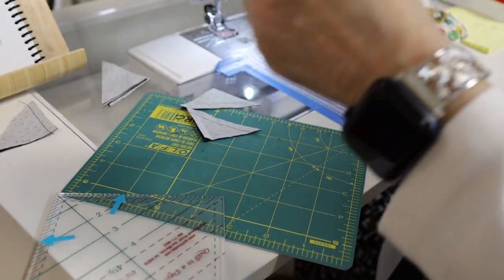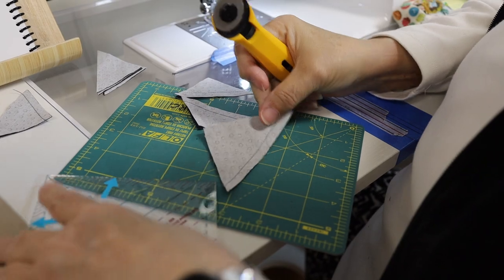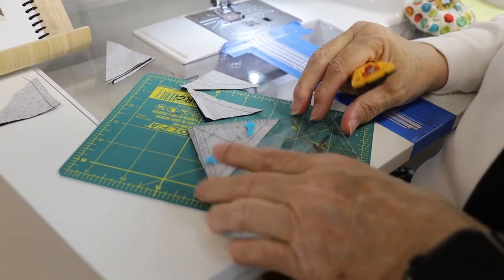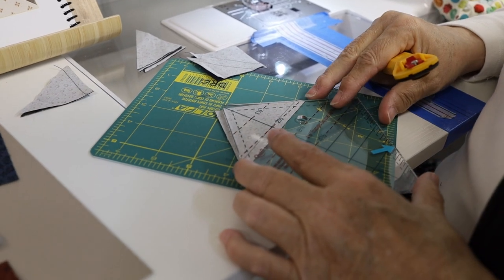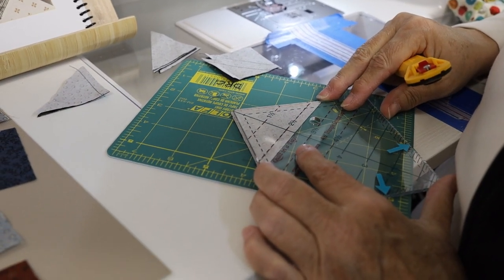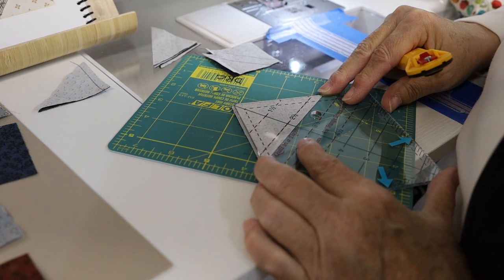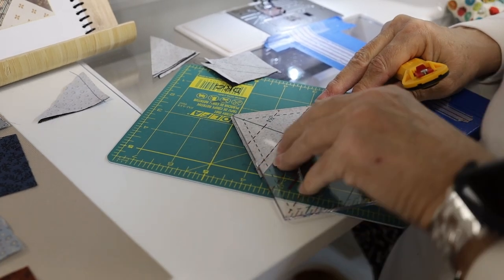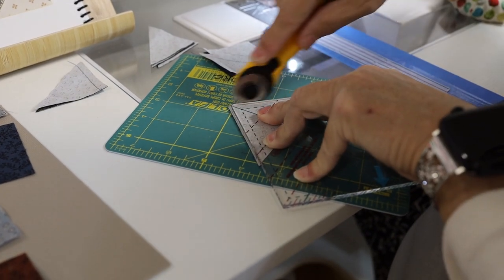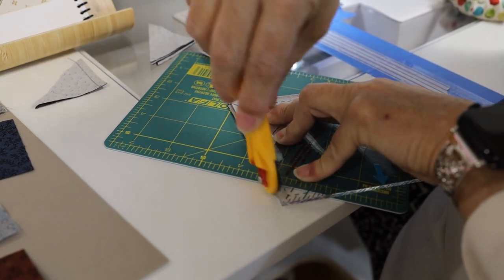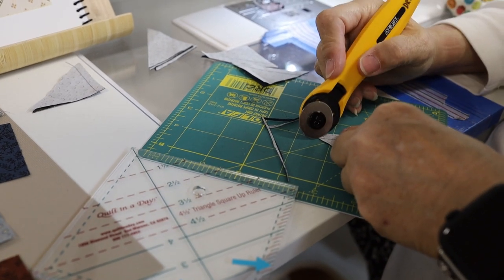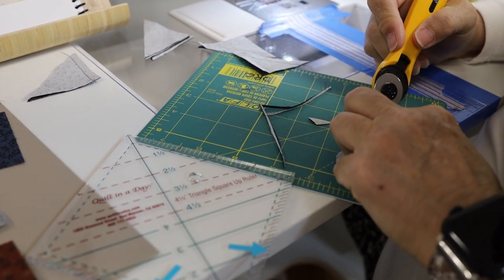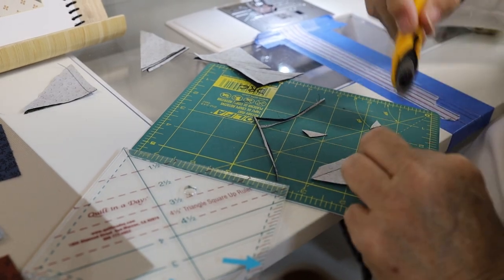On the big one, we're only going to use one of them. When you make half-square triangles this way, you get two. We're only going to use one. But we'll save this other one for another day. We'll do something with it.